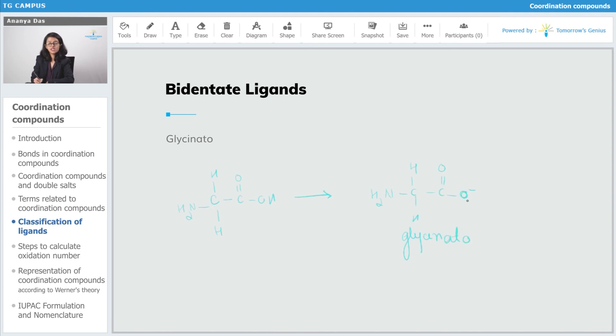Both the oxygen which has the negative charge as well as the nitrogen which has the lone pair can donate to the metal atom. Both of these oxygen as well as nitrogen will bind at the same time to the metal atom, thereby it is a bidentate ligand.